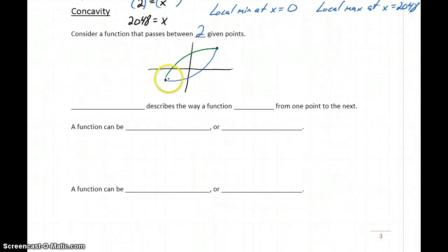So not only do we want to know where our function is increasing or decreasing, we want to know between different points which way it's curving. So which of these would be the appropriate type of curve or shape for our graph?